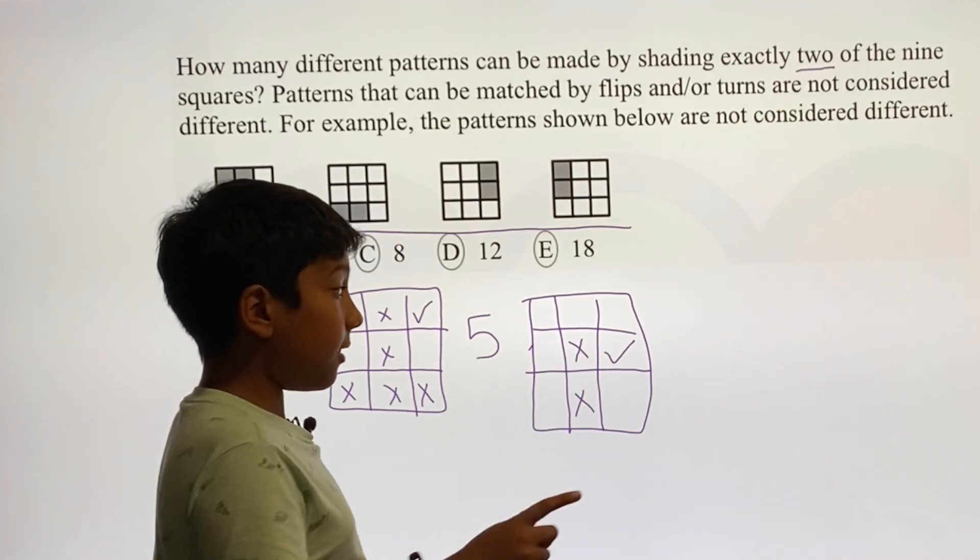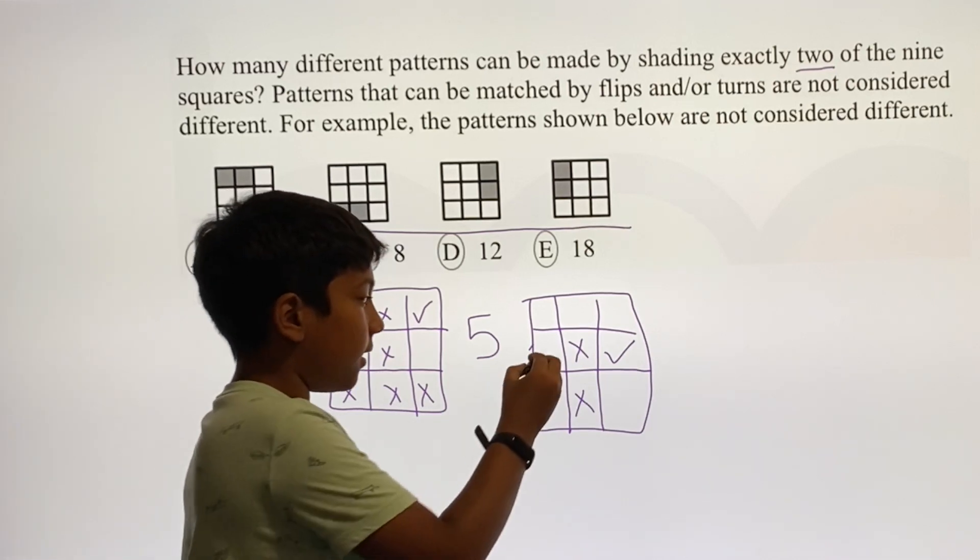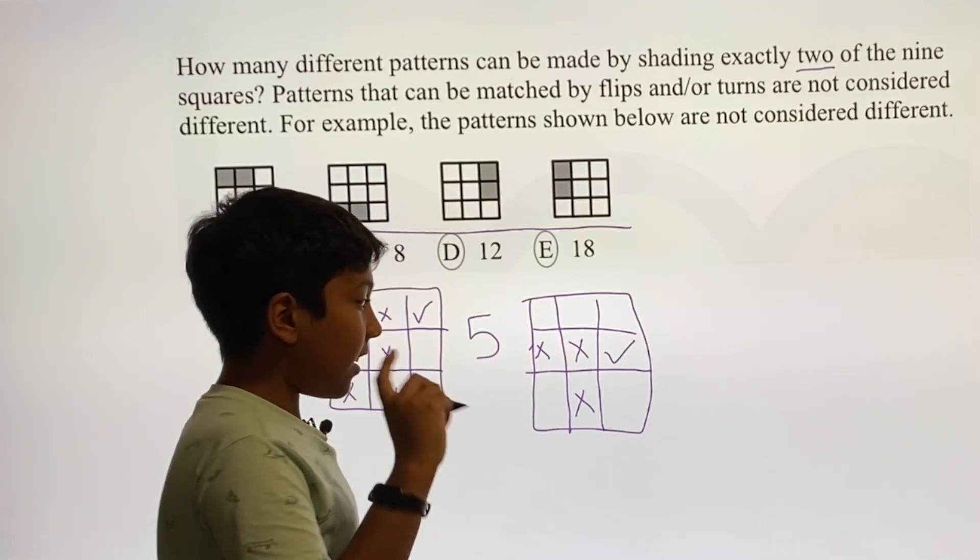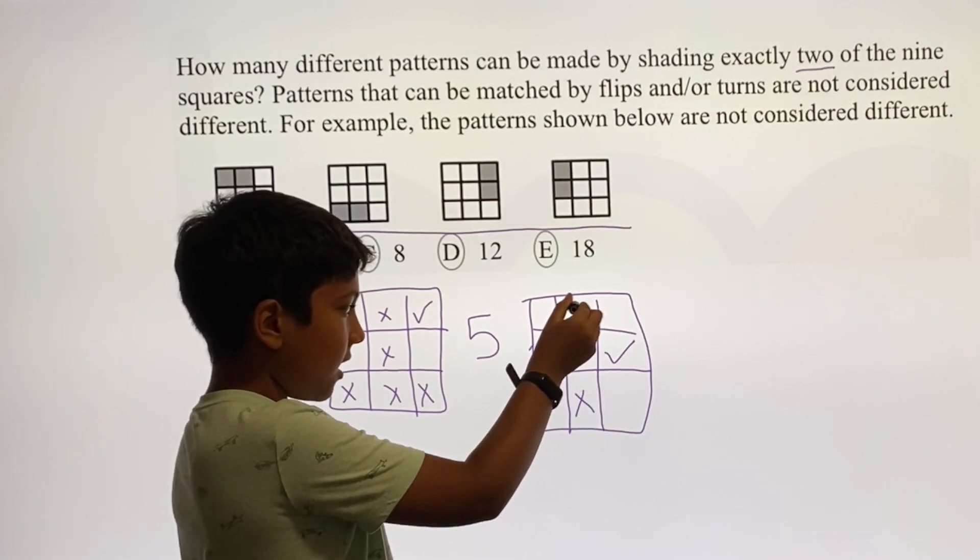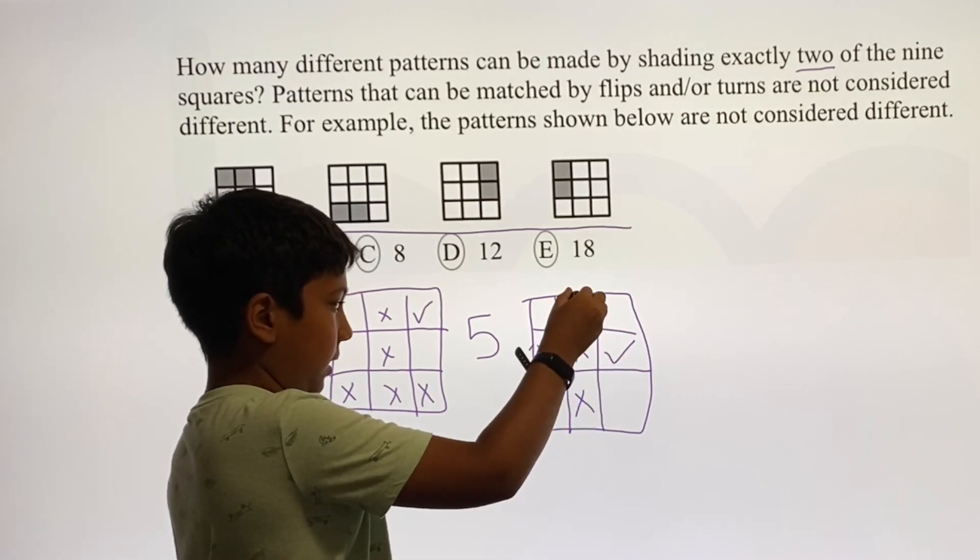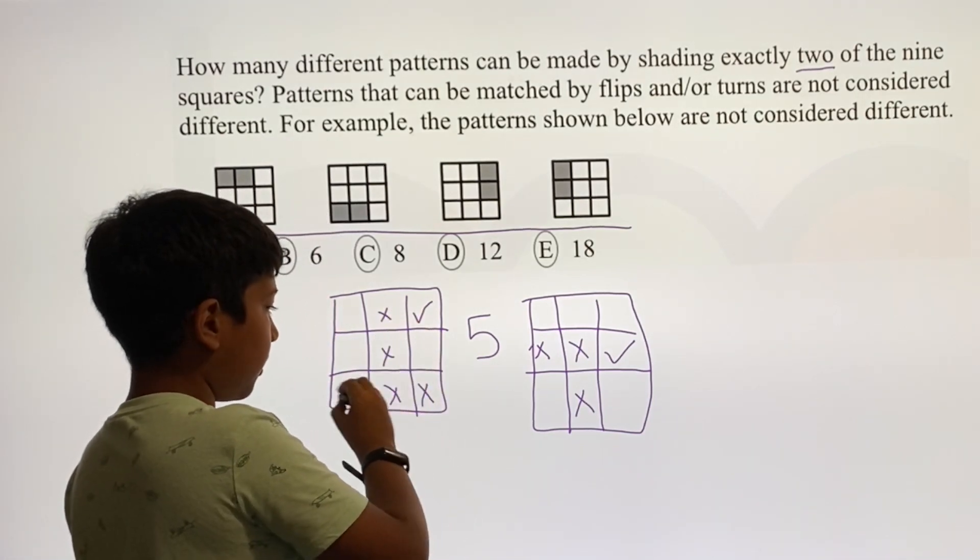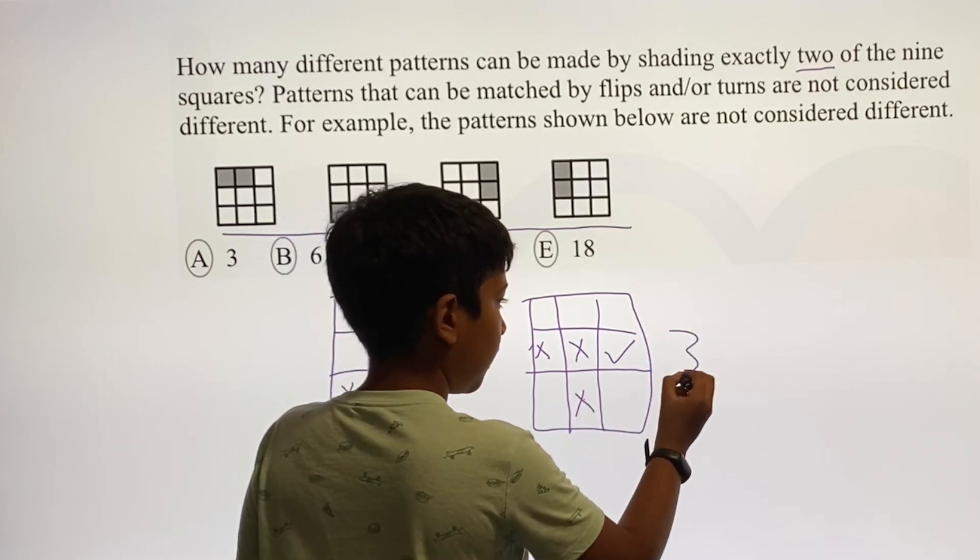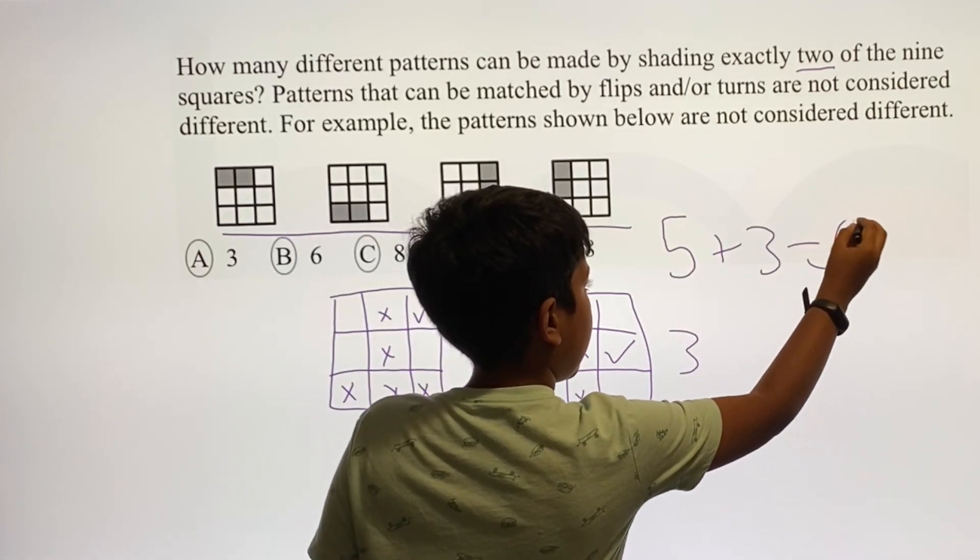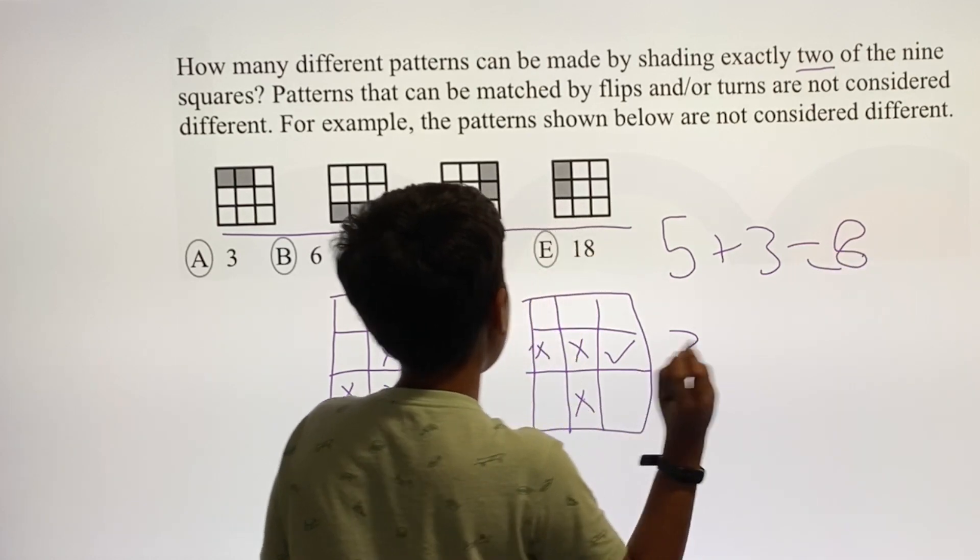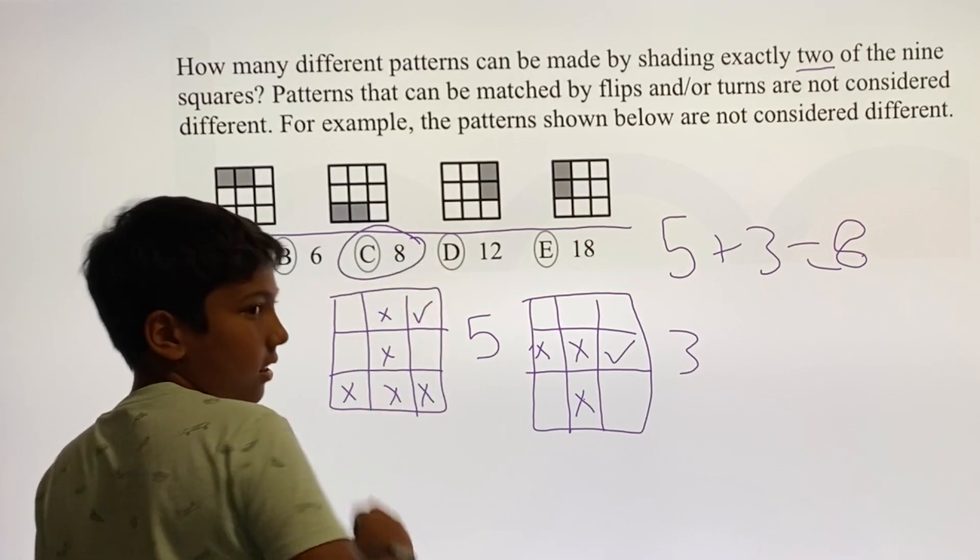There is nothing else that doesn't touch a vertex. The only other thing is this, but that's this flipped. So let's see: one, two, three, four, five, and one, two, three. Five plus three is eight. So the answer, how many patterns, is eight.